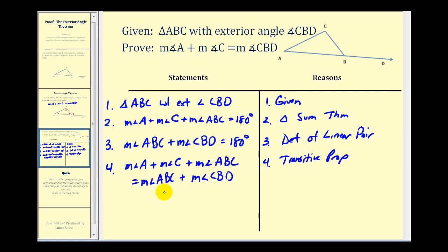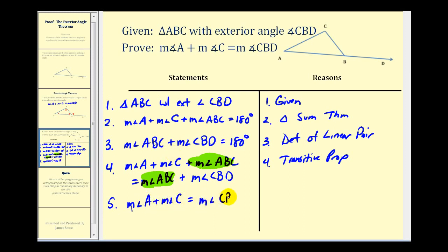Now if we take a look at this equation, if we were to subtract the measure of angle ABC from both sides of the equation, we would have what we're trying to prove: the measure of angle A plus the measure of angle C is equal to the measure of angle CBD. Our reason is the subtraction property of equality.